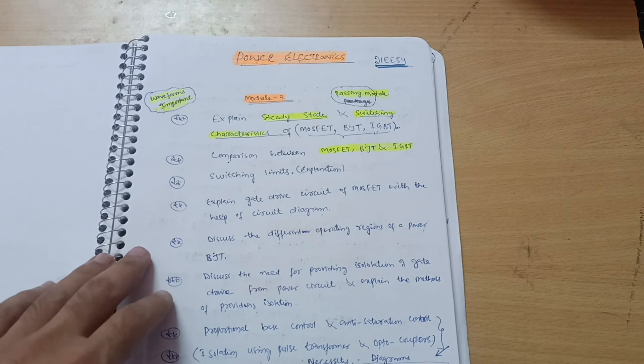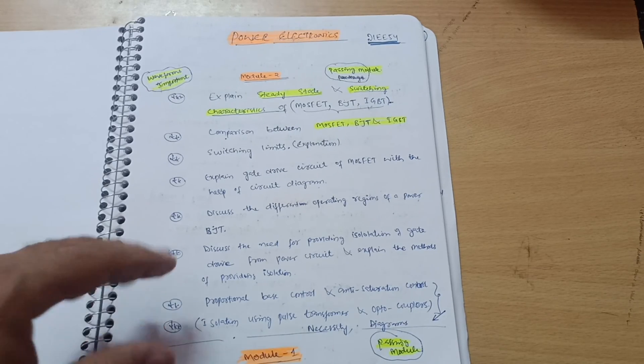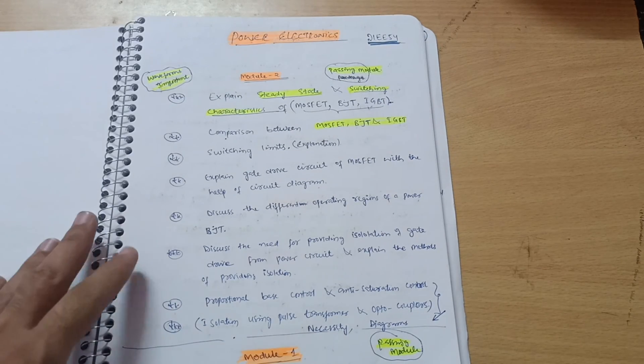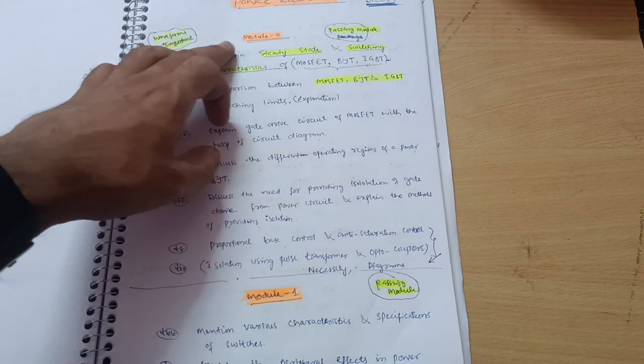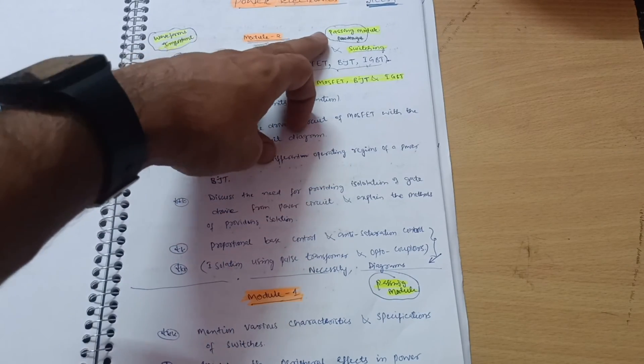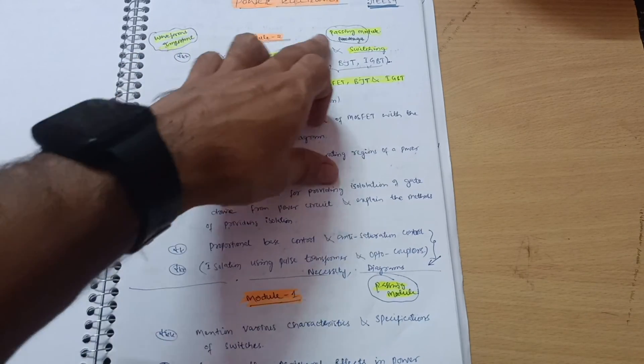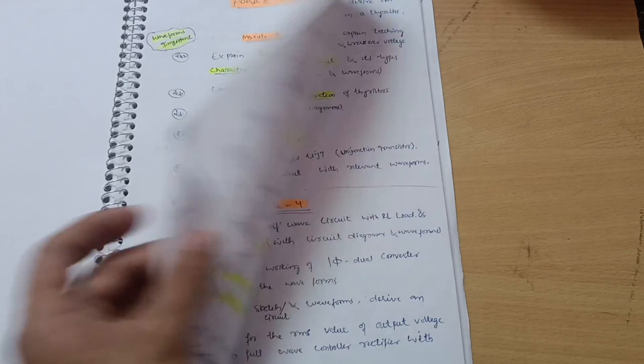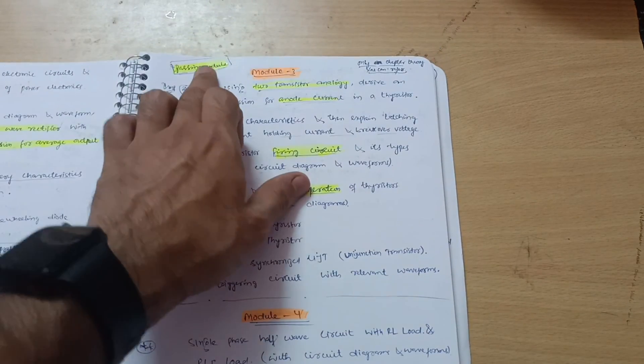Let me discuss first the passing module. How many modules are the passing modules in this subject? Module 2 is somehow better for passing. This is the passing module I have marked here. Next is Module 1, which is the passing module, and also Module 3 is the passing module.